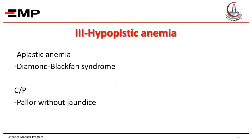Hypoplastic anemia may be aplastic anemia or one of the congenital causes called Diamond-Blackfan syndrome. In hypoplastic anemia, there is depression of the bone marrow. The clinical picture is pallor without jaundice.